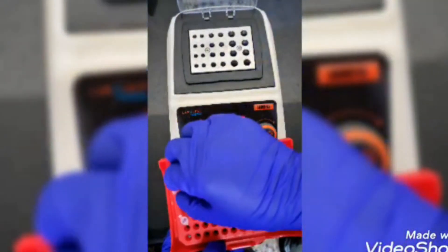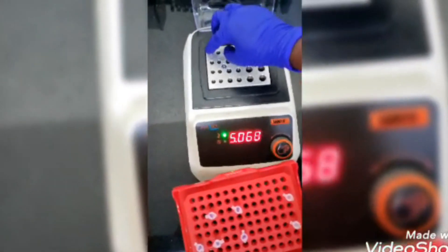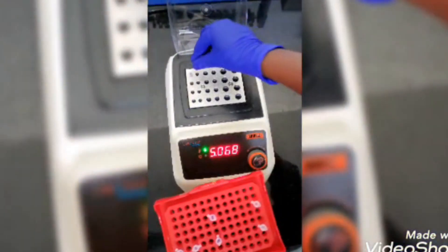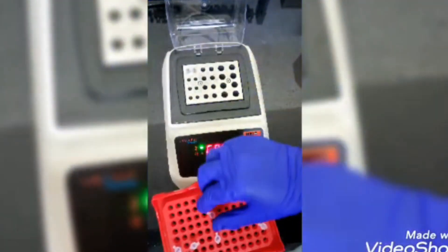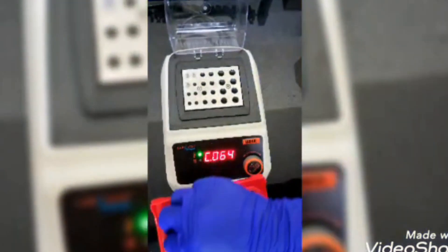Now, the reaction is ready to keep in heat block. Incubate the samples at 60 degrees for 30 to 40 minutes to see visible color change.